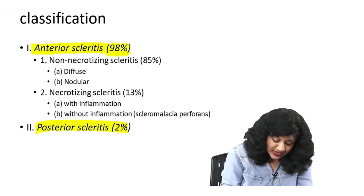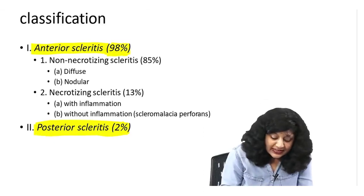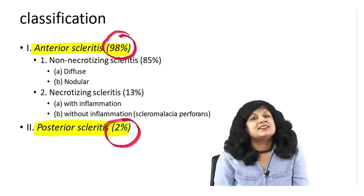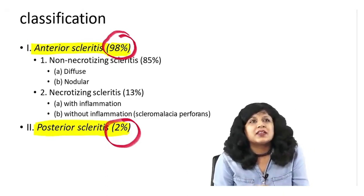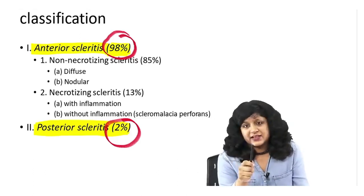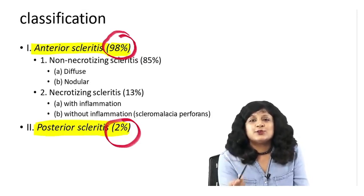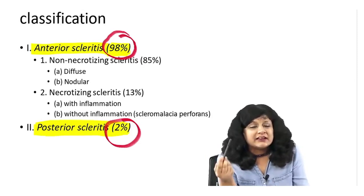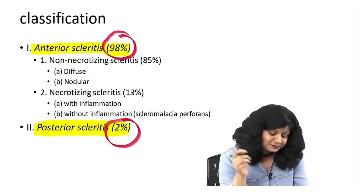We can broadly classify scleritis into anterior scleritis and posterior scleritis. Anterior scleritis is 98% and posterior scleritis is just 2%. So in 98% of cases we are having anterior scleritis. When a question comes and you are thinking about scleritis, your first instinct should be to diagnose it as anterior scleritis. If it is not very clear which kind of scleritis it is, it is better to choose anterior scleritis than the posterior one.